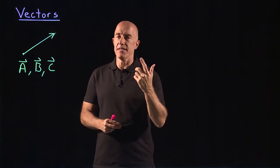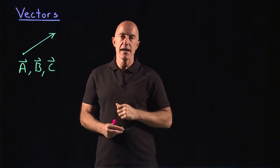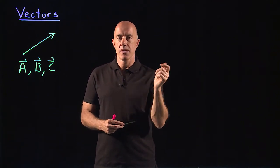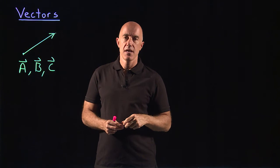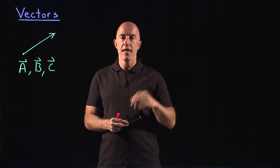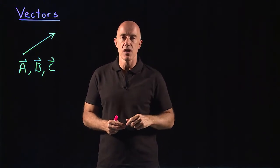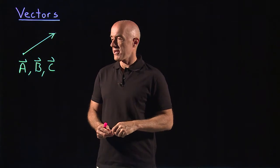For instance, a vector could be like the acceleration of a mass or an electric field. And a scalar could be like the mass itself, the mass of the object, or the electric charge of a charged particle.